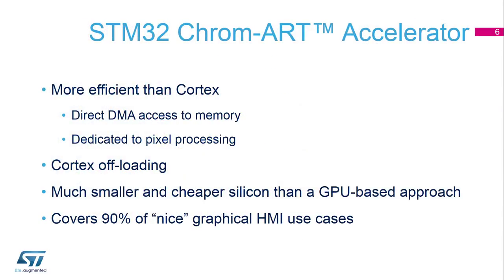That's why ST introduced the Chromart Accelerator in its STM32 family. It is more efficient than the Cortex, has direct DMA access to memory, and is dedicated to pixel processing. The main advantage is to offload the Cortex during graphical rendering. It's much smaller and cheaper silicon than a GPU-based approach. A GPU is a graphical processing unit and generally involves a strong software framework and a lot of dedicated memory. The Chromart covers 90% of nice graphical human-machine interface use cases.